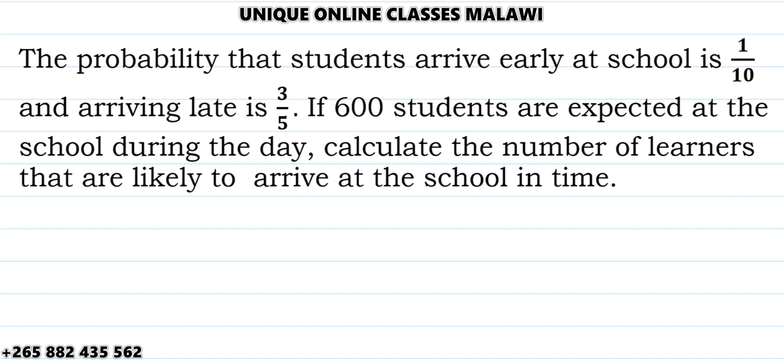Let's have the solution of this problem. It's about probability. The question reads: The probability that students arrive early at the school is 1 over 10, and arriving late is 3 over 5. If 600 students are expected at this school during the day, we should calculate the number of learners that are likely to arrive at the school on time.